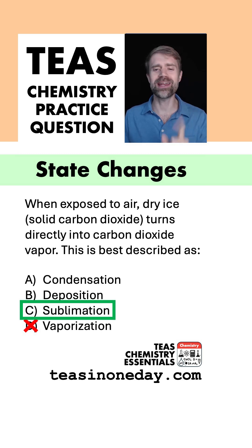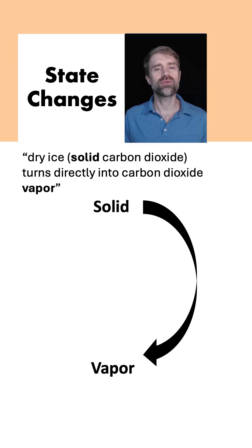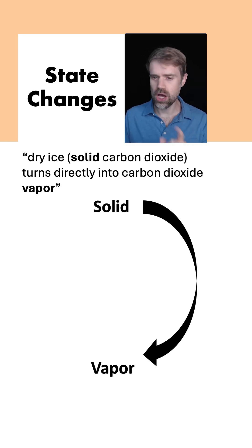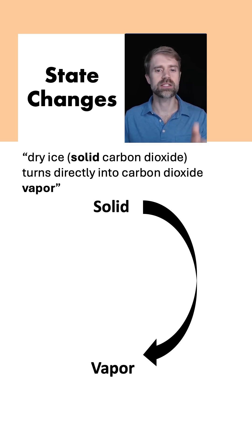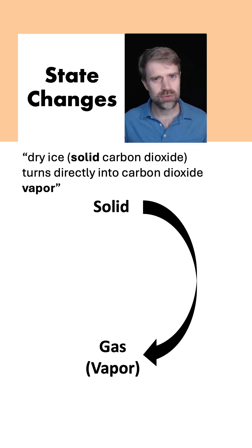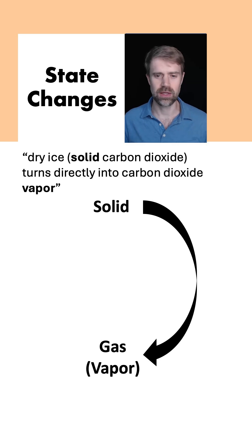Let's take about one minute to talk through this question and learn what you need to know for the test. For the TEAS, you need to know the names for the different changes between states of matter. The question says solid carbon dioxide turns into carbon dioxide vapor. It's important to know that vapor is another term for gas. There are some technical differences, but they're not important for the TEAS — gas and vapor are the same thing.